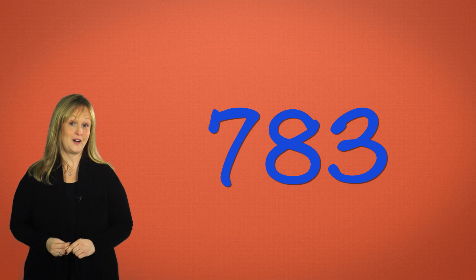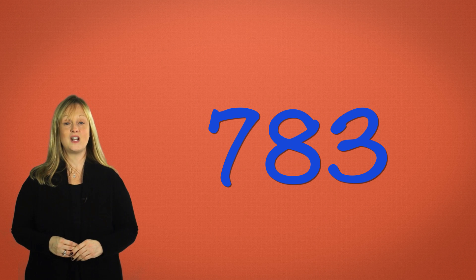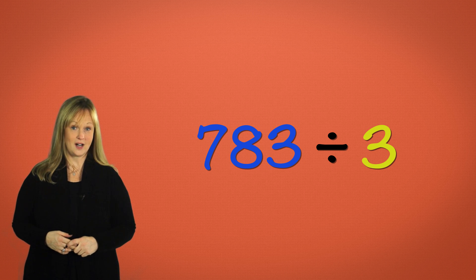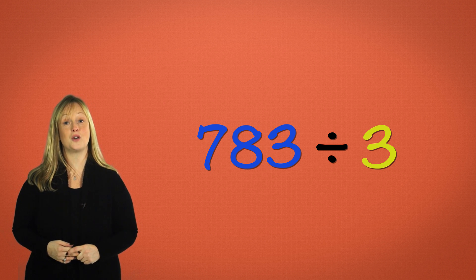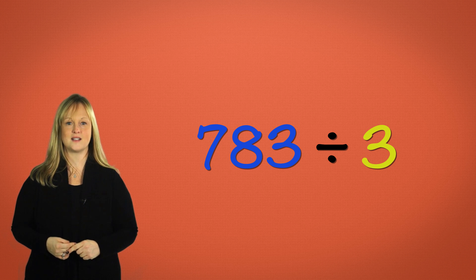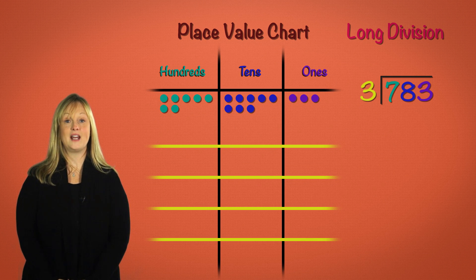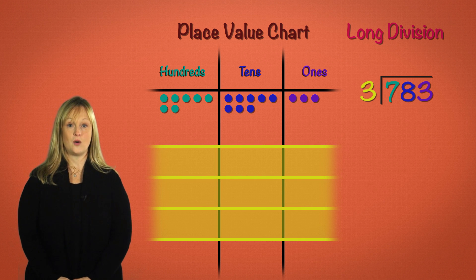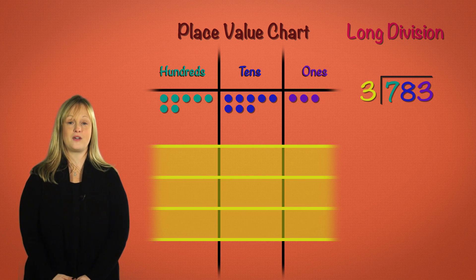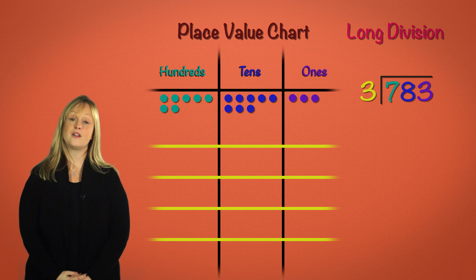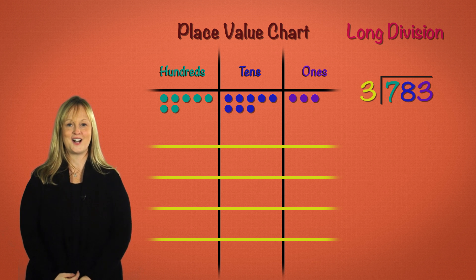So I promised big numbers. How about 783? We'll be dividing 783 by 3. Let's start by setting up our place value chart and our long division equation. Which of these choices is correct? Great! We have 783 in the place value chart with three groups below to represent dividing by 3. And in long division we have 783 inside the house and the divisor, 3, outside. We're all set and ready to go!